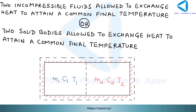The first case is two incompressible fluids allowed to exchange heat to attain a common final temperature. We can also say it as two solid bodies allowed to exchange heat to attain a common final temperature. These are two bodies having masses M1 and M2, specific heats C1 and C2, and temperatures T1 and T2. Together they constitute the system, and this is an insulated system.